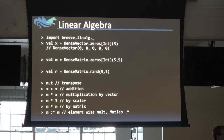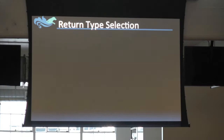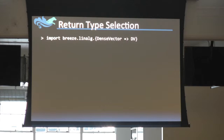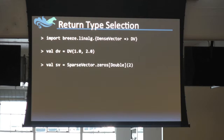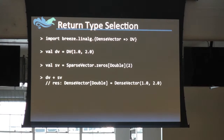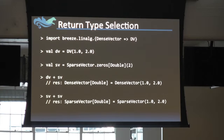For the rest of this segment I'll use DV instead of dense vector using Scala's built-in rename import feature. One nice thing about Breeze is that it can automatically choose the right return type for different kinds of vectors. If you add together a dense vector and a sparse vector, the right result is a dense vector since it won't get any more sparse. But if you add together two sparse vectors, it'll stay sparse.